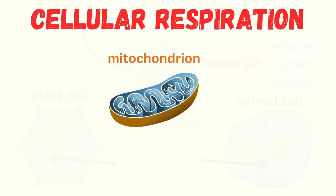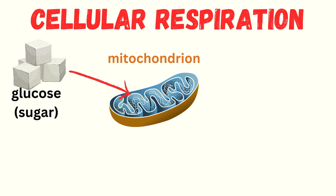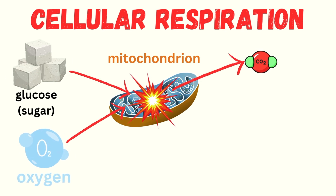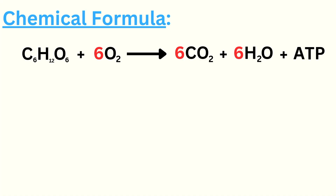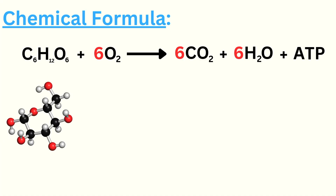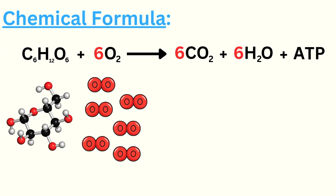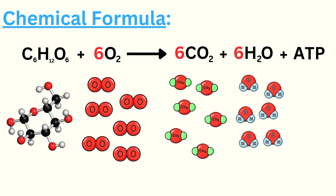Let's take a closer look at the process of cellular respiration. Inside the cell, mitochondria use sugar and oxygen to produce carbon dioxide, water, and ATP — the energy your cells need to do basically everything. Here's the chemical formula for cellular respiration: glucose plus six oxygen molecules yield six carbon dioxide and six water molecules, along with ATP.